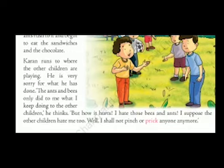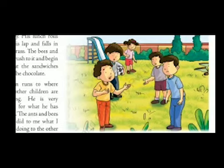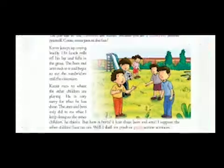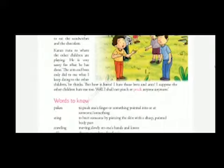'But how it hurts! I hate those bees and ants. I suppose the other children hate me too. Well, I shall not pinch or poke anyone anymore.' As we can see in the picture, Karan went to the other children, talked to them politely, and promised he would not trouble anyone ever again. This was all about Karan's naughty behavior — and when the other children failed to make him understand, nature decided to teach him about the hurt and pain he was causing others.